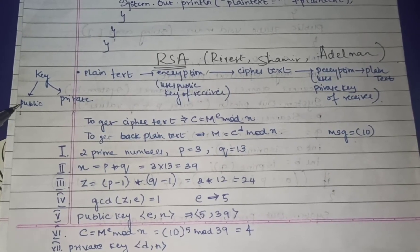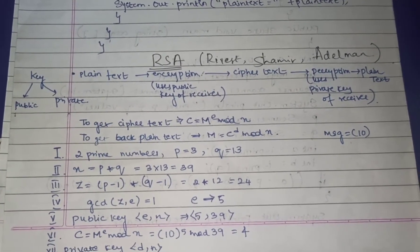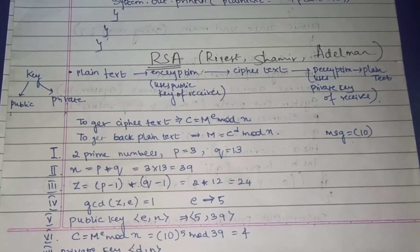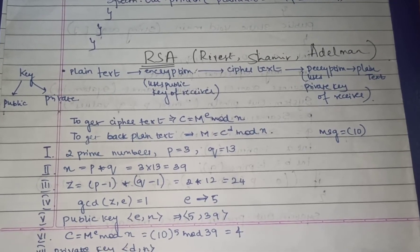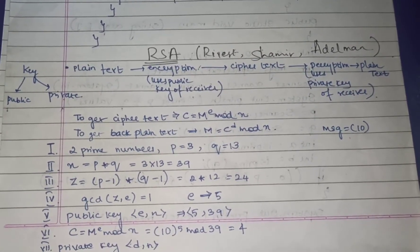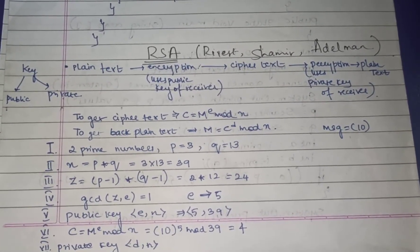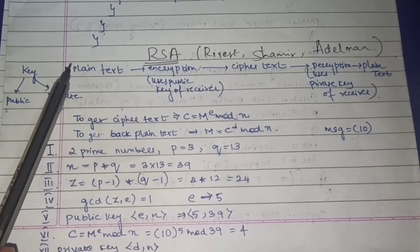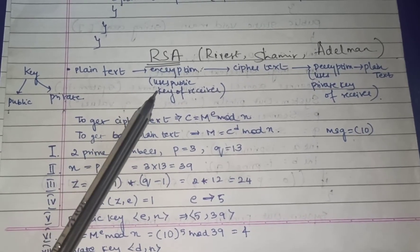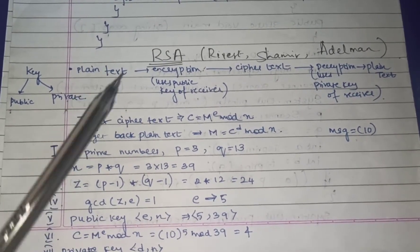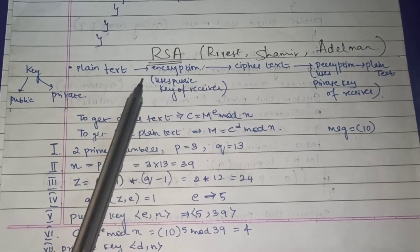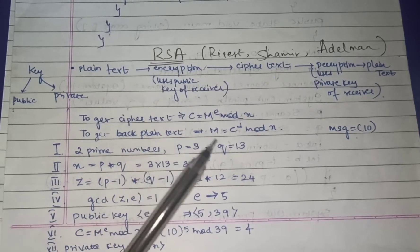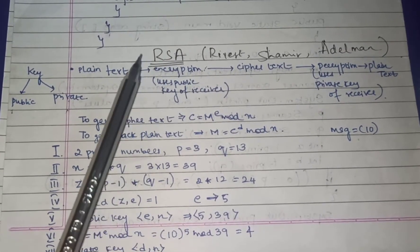RSA uses two keys: a public key and a private key. You can consider the public key as your personal email ID, which is available to everyone, and the private key as your password, which is only available to you. A sender sends a plain text message which is encrypted using the public key of the receiver.